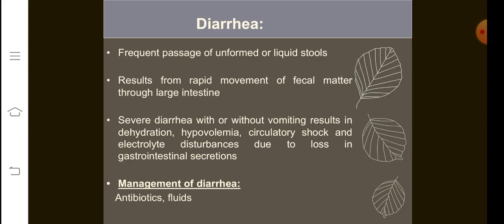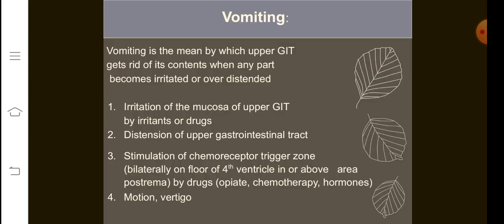The management of diarrhea involves certain antibiotics and IV fluids. Vomiting is the means by which the upper GIT gets rid of its contents when any part becomes irritated or overly distended. If there is irritation of the mucosa of the upper GIT — due to some irritant or drug — it will cause the contents to be removed from the stomach.